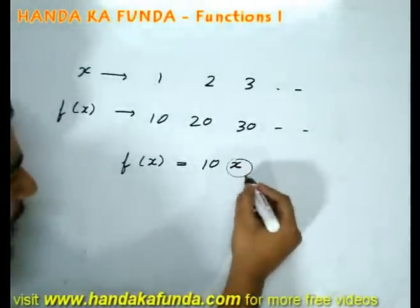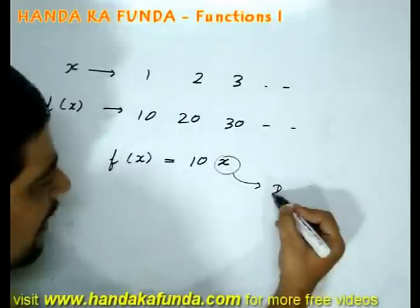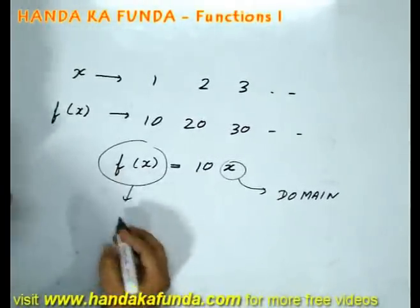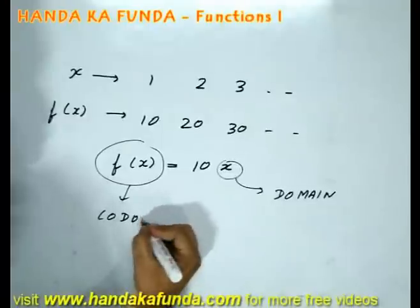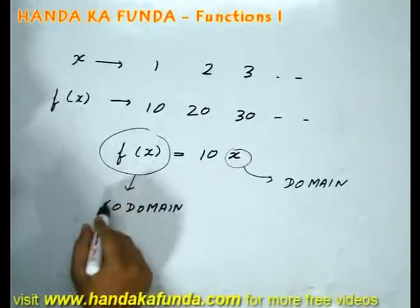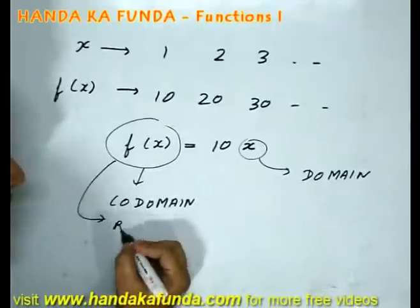For example, whatever values x can take in a function is known as the domain of the function, and whatever values f can take are known as co-domain of the function. The values that f will take are known as the range of the function.